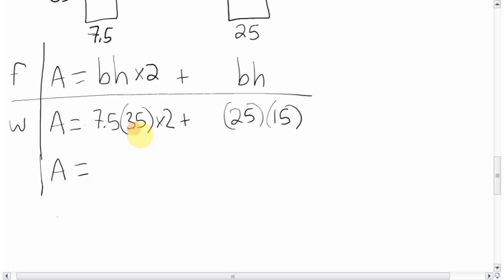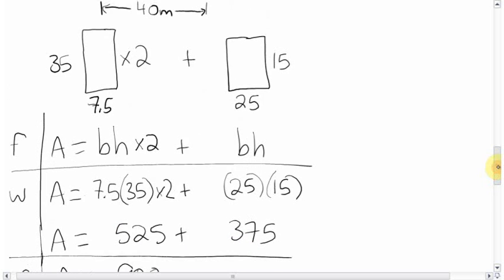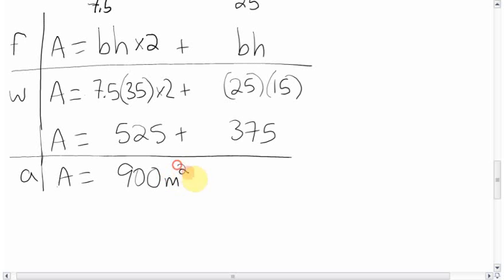Punch those numbers in. 7.5 times 35 times 2 gives you 525. And 25 times 15 gives you 375. When you add those two together, you'll get your final answer. 525 plus 375 is 900. Let's do a double check of the units. There are meters in its area, so it's going to be meters squared. Done.